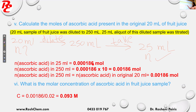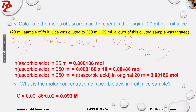Those 0.000186 moles were present in 25 ml. So I can find the moles in the full 250 ml solution. From 25 to 250 is 10 times, so the moles must be 10 times more. The 25 ml is just a portion taken out of the 250 ml, so multiply by 10 — giving 0.00186 moles in the 250 ml solution.